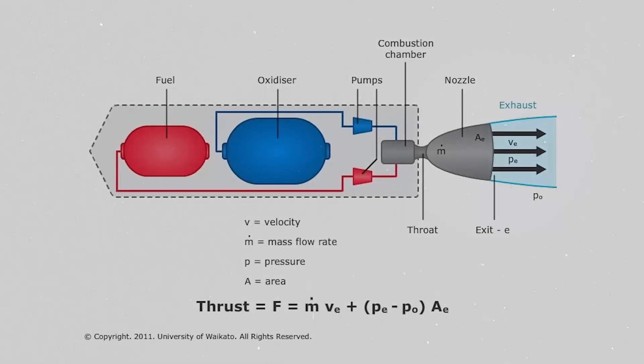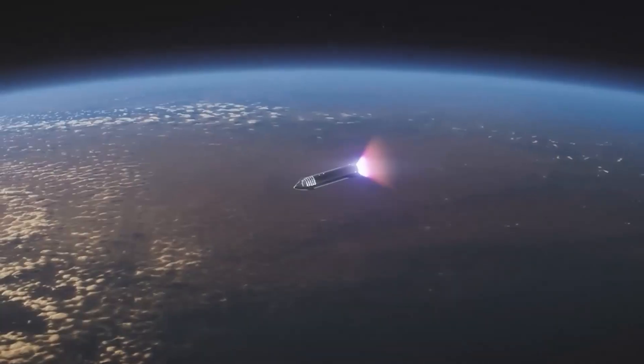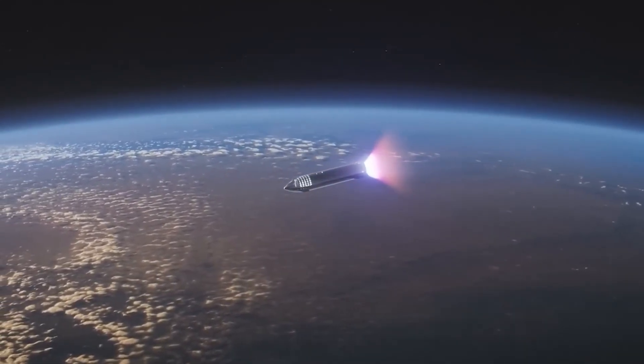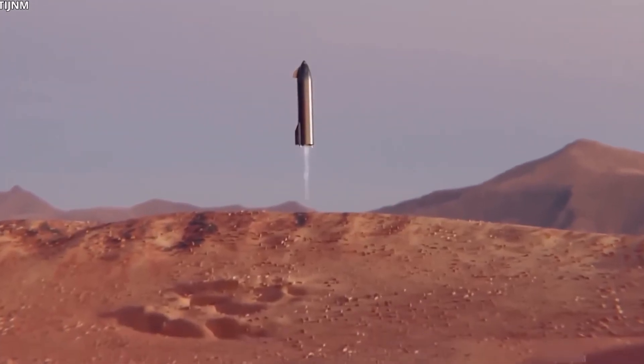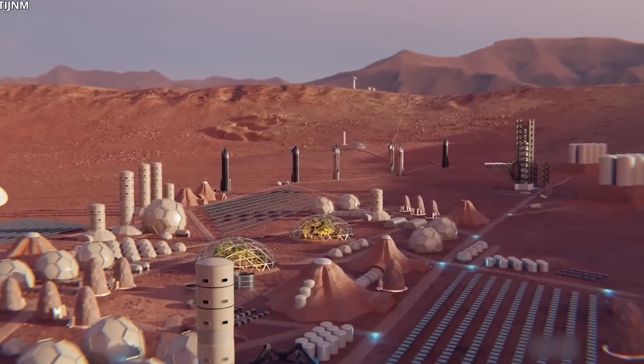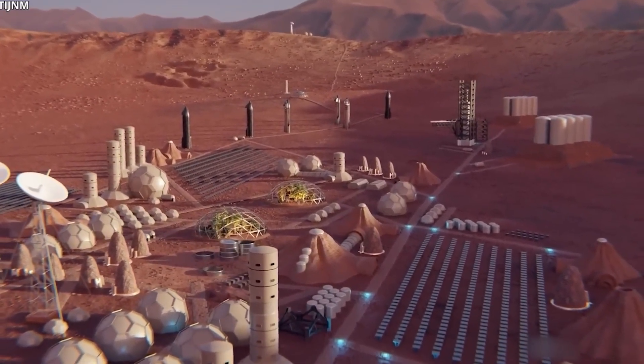The thrust is so great that the efficiency is 2.3 times that of a chemical rocket engine. Traveling on such an engine would take eight months, and nuclear thermal rocket engines would reduce that period by a factor of two. And it will be possible to get to Mars in three months, which means that astronauts will need less potential cost and will be less exposed to radiation.